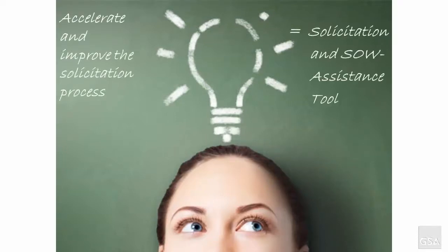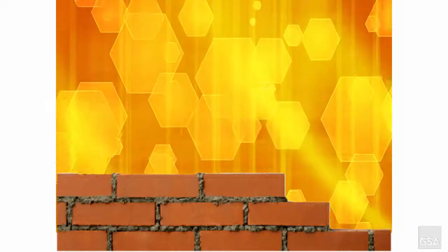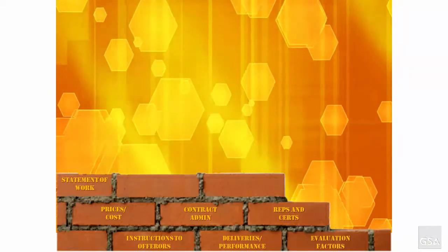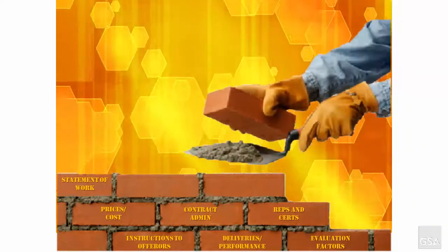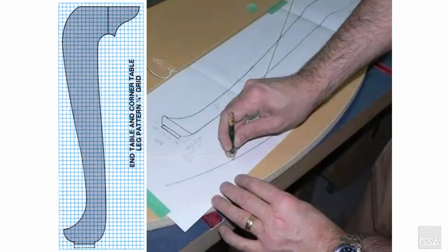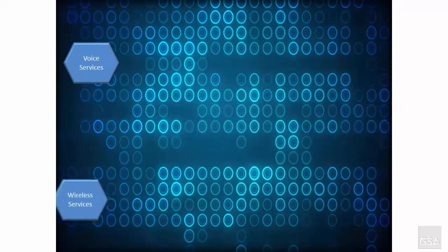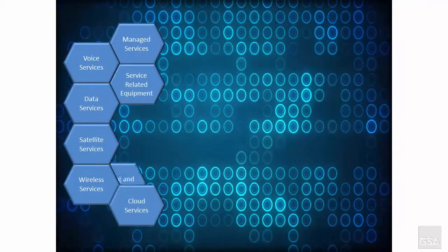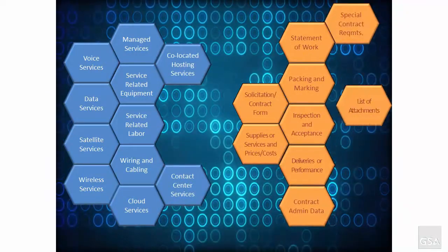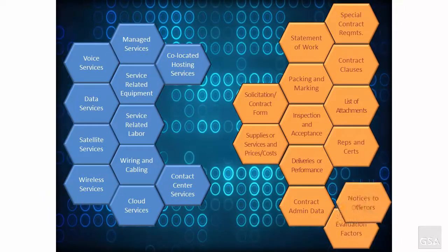What we came up with is the Solicitation and SOW Assistance tool. It turns out that solicitations can be automated because they have parts that are similar from one to another, and these parts can be assembled in predictable configurations to achieve standard objectives and functions. Just like a furniture maker who accelerates and standardizes the production of a Queen Anne table, we developed templates that can be used to ensure conformance and quality. Then we took the next step to develop a taxonomy of telecommunications and IT requirements that we mapped to our service descriptions and offerings on the contracts we wanted to support with solicitation automation.